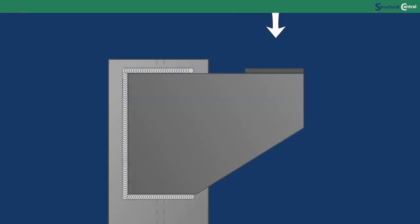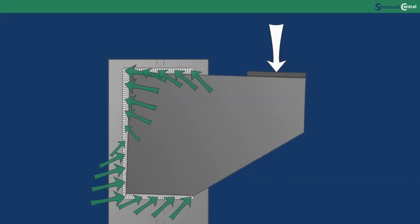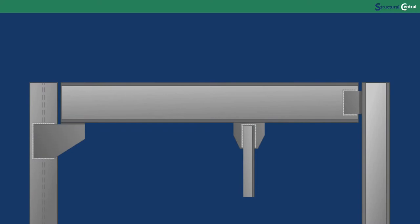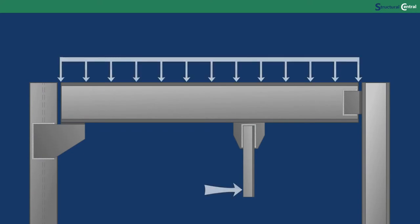Hello engineers, today I'm going to show you how to determine the stress in a weld that is eccentrically loaded. Eccentric loading of welds comes up frequently in steel connection design. Anytime you have a load that does not pass through the centroid of a weld, eccentricity must be considered. This means nearly all welds made for simple shear connections must be designed for eccentricity.